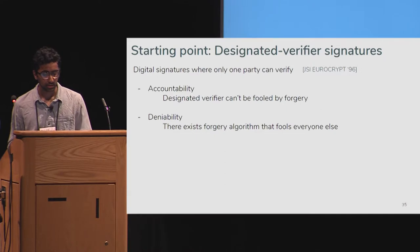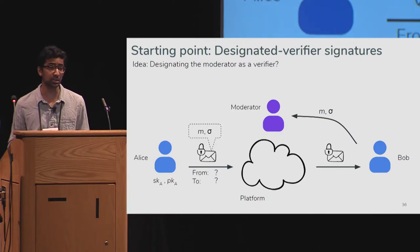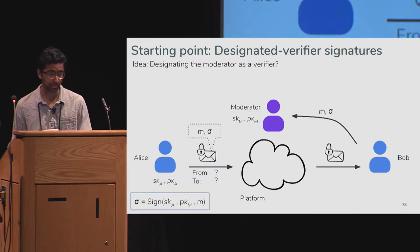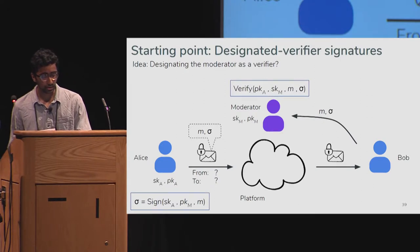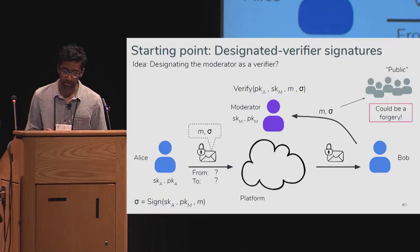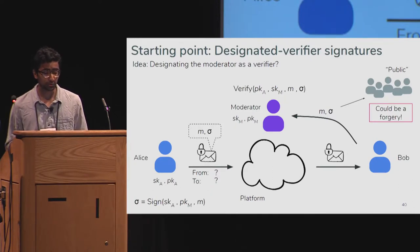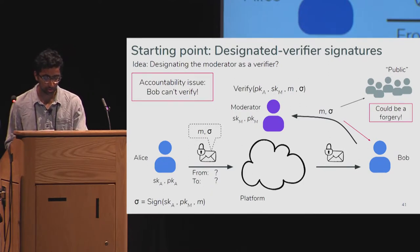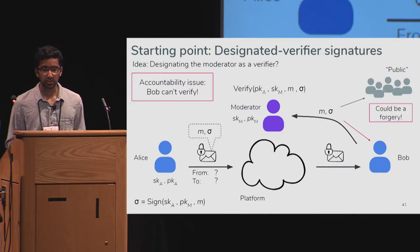Now consider using designated verifier signatures with the moderator as the designated verifier. Alice signs her messages using the moderator's public key, and the moderator verifies using its own secret key. By the designated verifier property, others can't be convinced a message is from Alice since it could have been a forgery. Unfortunately, by that same property, Bob also can't check whether the signature will be accepted by the moderator. This means Alice can evade moderation by sending Bob bad signatures. So to complete the accountability picture, we still need something more — specifically, some way for Bob to verify that the signature will be accepted by the moderator.